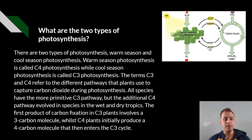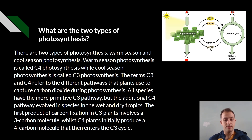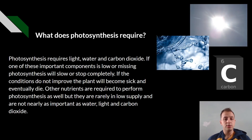All species have the more primitive C3 pathway, but the additional C4 pathway evolved in species in the wet and dry tropics. The first product of carbon fixation in C3 plants involves a three-carbon molecule, while C4 plants initially produce a four-carbon molecule that enters the C3 cycle.